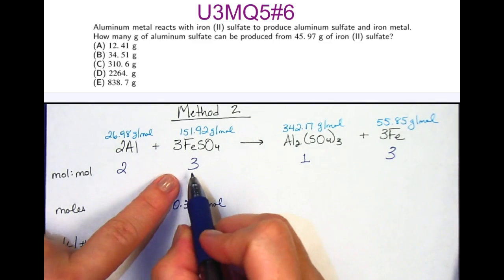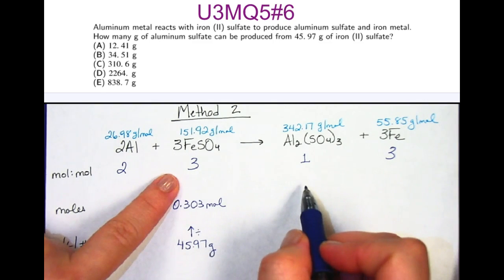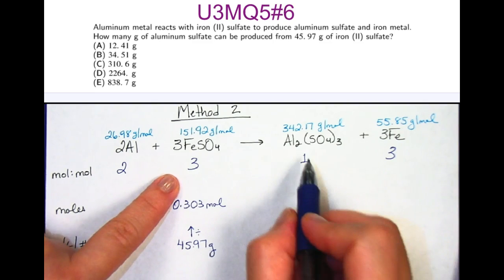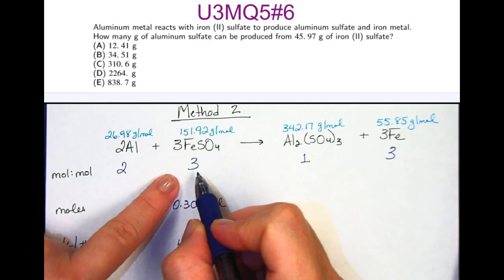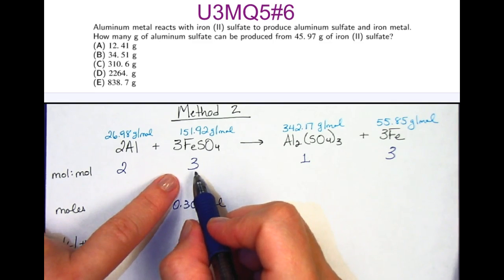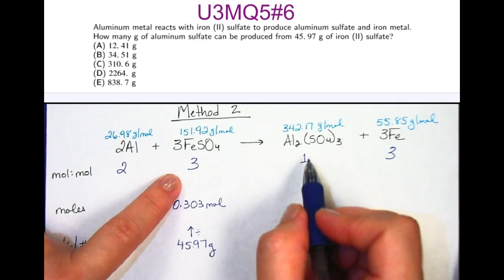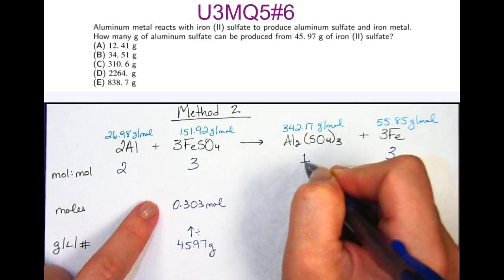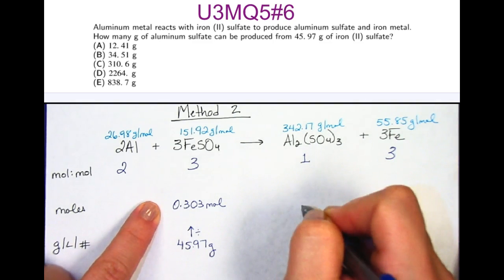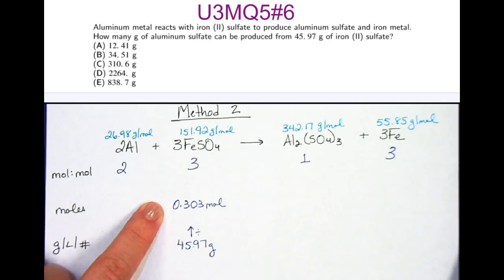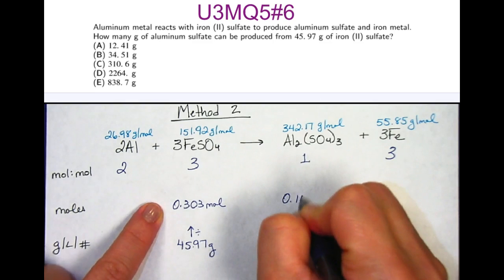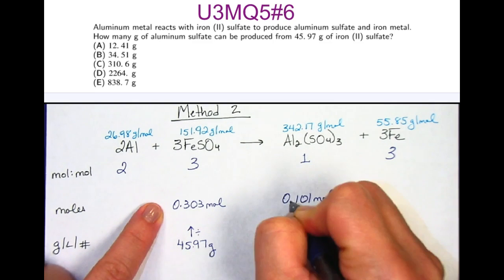Now, I want to figure out aluminum sulfate first, because it's got a 1 to 3 ratio. However, you have to recognize that we have 3 times more iron sulfate than we do aluminum sulfate. Therefore, we have one third this amount equal to my aluminum sulfate. So if I take the 0.303 and I divide it by 3, then I'll get 0.101 moles of aluminum sulfate.